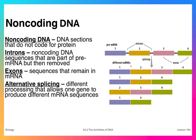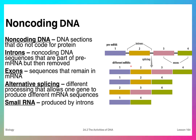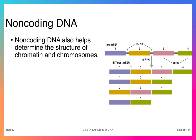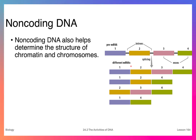Between these introns and exons, there can be alternative splicing, which is a process where different exons are joined into different RNA sequences. Sometimes this can produce a small piece of mRNA from the introns that doesn't code for any protein. Non-coding DNA also determines the structure of the chromatin and the chromosome.